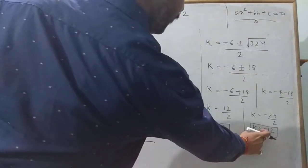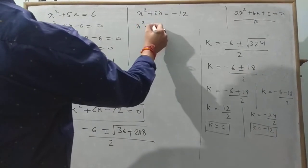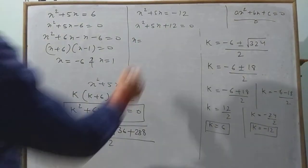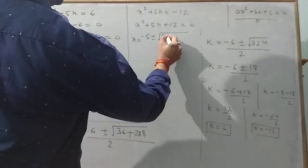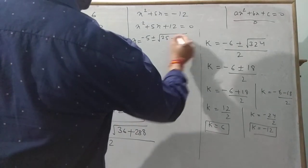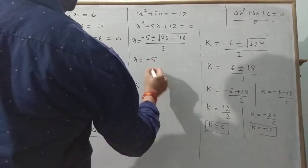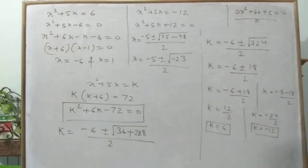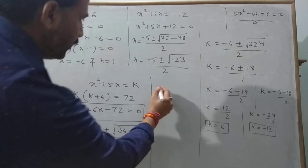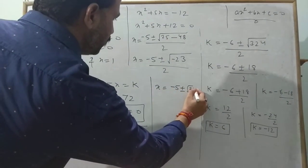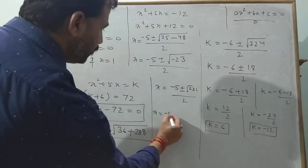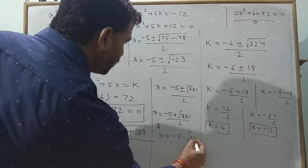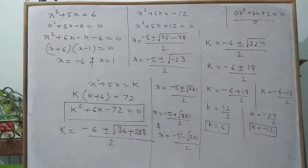Since x² + 5x + 12 = 0 cannot be factorized, we use the formula: x = (−5 ± √(25 − 48))/2 = (−5 ± √(−23))/2. Since the discriminant is negative, we use i, giving x = (−5 + √23 · i)/2 and x = (−5 − √23 · i)/2. These are complex roots.